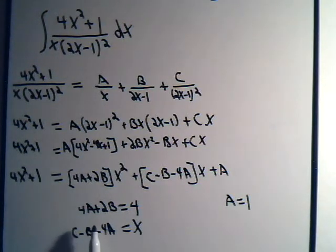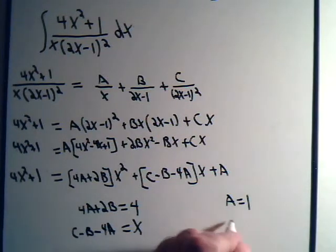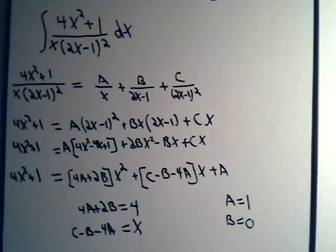And there's one constant term here and one here. So it looks like A equals 1. If A is 1, 4 times A is 4. So B must be 0.